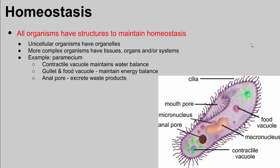All organisms have structures that help them maintain homeostasis. We're going to talk a lot about humans, but also other types of organisms in this unit. In humans, we generally think about organs and organ systems. But even unicellular organisms have to maintain homeostasis — they don't have organs, but they do have specialized structures called organelles. For example, in the paramecium, the contractile vacuole helps maintain water balance, the gullet and food vacuole help take in food particles for energy, and the anal pore excretes waste.